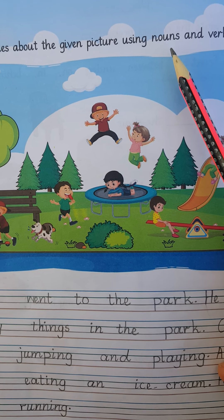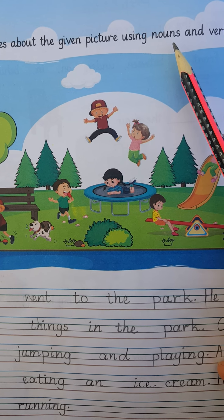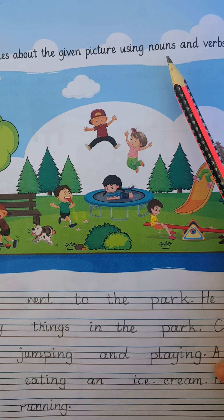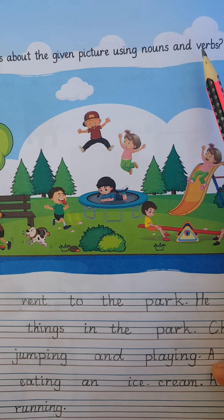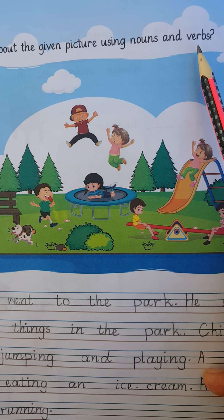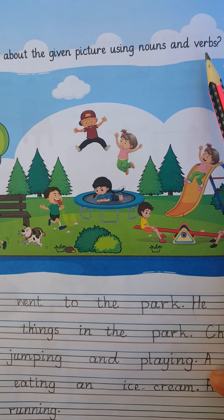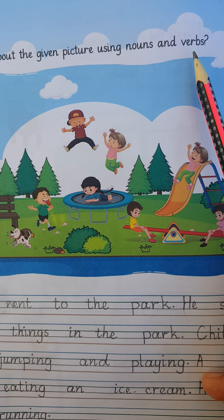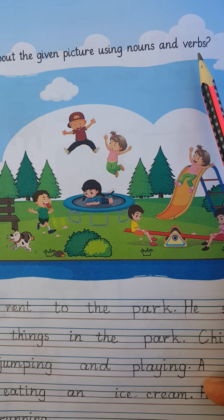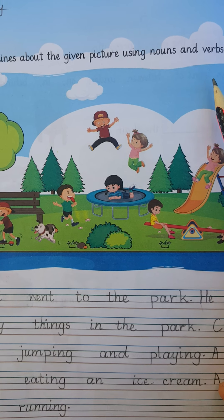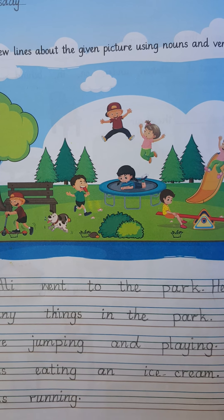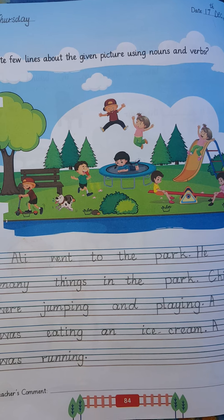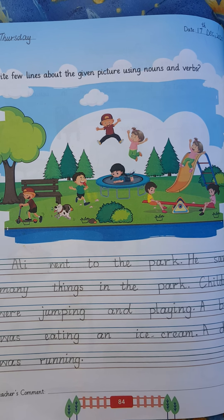Nouns are naming words — name of a person, place, or thing. And what are verbs? Verbs are action words, doing words. So we have to write some lines using some verbs and nouns.